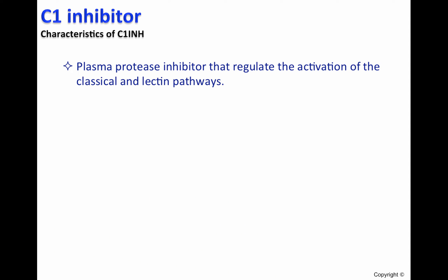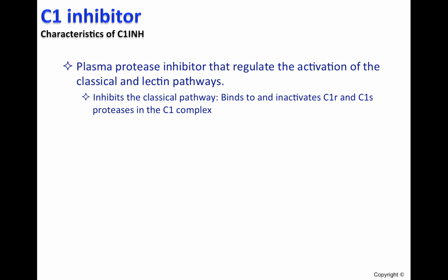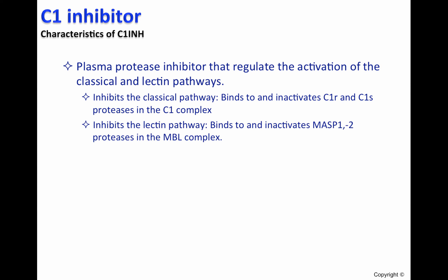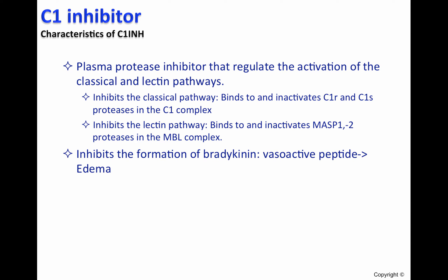C1 inhibitor is a plasma protease inhibitor that regulates the activation of the classical and lectin pathways. C1 inhibitor inhibits the classical pathway by binding to and inactivating C1R and C1S proteases in the C1 complex, and also inhibits the lectin pathway by binding and inactivating MASP1 and MASP2 proteases in the MBL complex. In addition, C1 inhibitor inhibits the formation of bradykinin, a potent vasoactive peptide that causes edema.